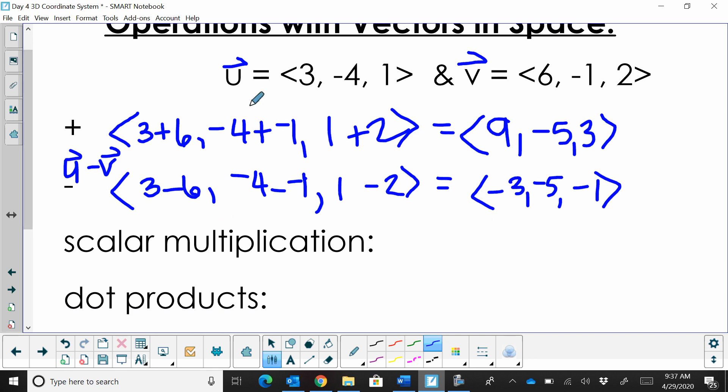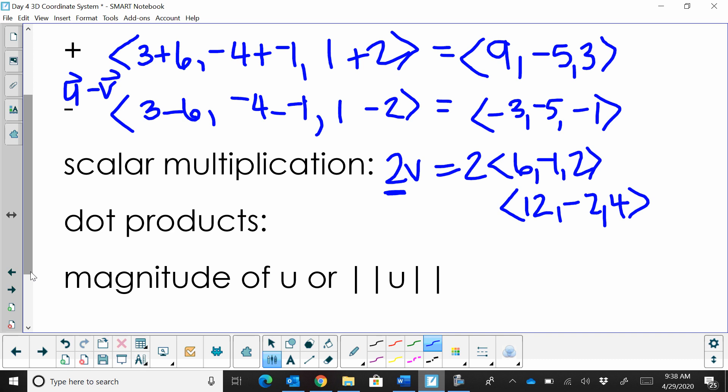Scalar multiplication. Scalar multiplication in 3 dimensions is exactly like 2 dimensions. So let's say we're going to have 2v. We're going to very simply multiply each position in the v vector by 2. So that's 2 times the vector 6, negative 1, 2, and that becomes the vector 12, negative 2, and 4. So it's just multiplying each value by 2, doubling that distance.